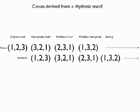Endings have to be manufactured because the canon has a tendency to continue indefinitely unless it's stopped. This involves liquidating the features of the original motif and emphasising the primary axis in both parts in order to produce a pitch cadence.